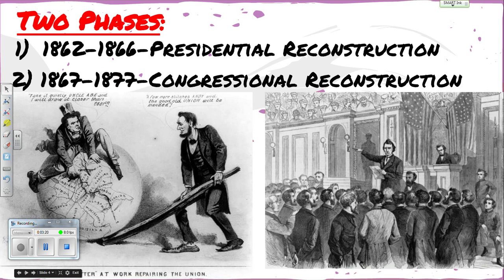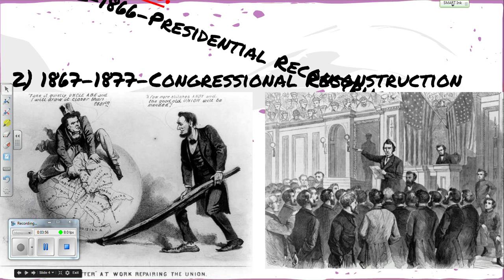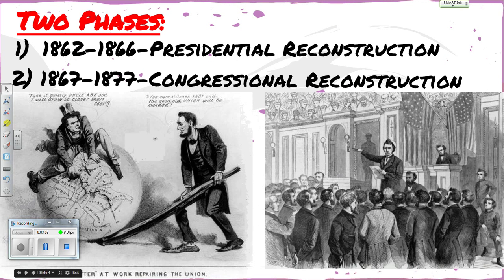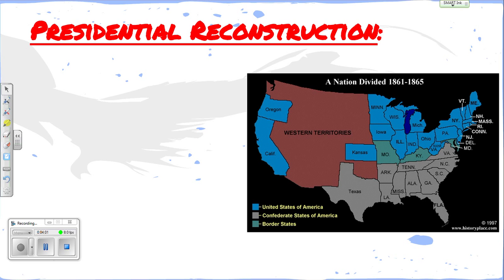Reconstruction basically has two phases. The first phase is actually during the war — the war goes from 1861 to 1865 — so the first phase is 1862 to 1866. That's called Presidential Reconstruction, where the president is leading the changes. The second phase is called Congressional Reconstruction, from 1867 to 1877, when Congress runs the show because the president has no power.